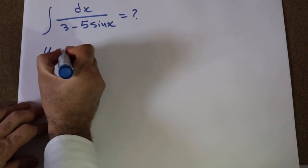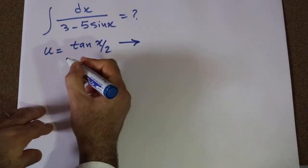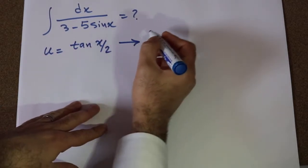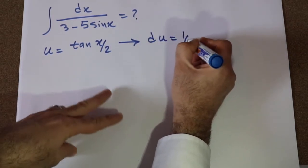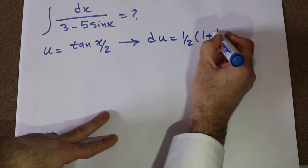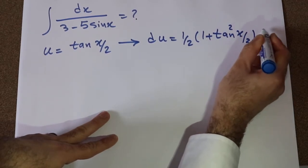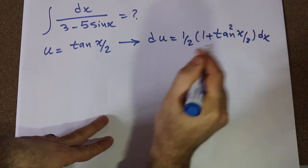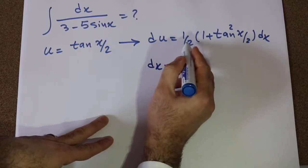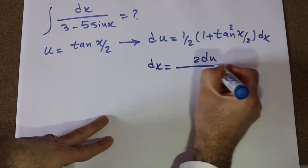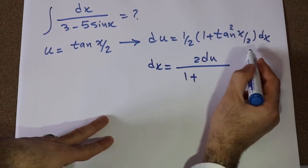That is, if you define u as tangent x divided by 2, and take the derivative from each side of this equation, you can write du is equal to 1 divided by 2 times 1 plus tangent squared x divided by 2, dx. From this equation you can conclude that dx will be equal to 2 times du divided by 1 plus tangent squared x divided by 2.